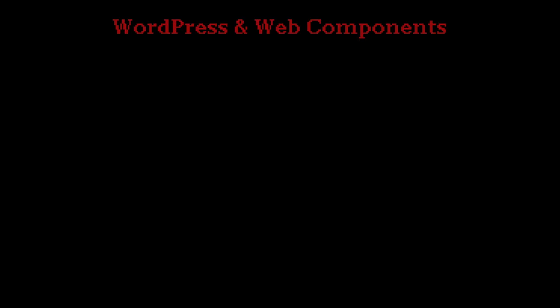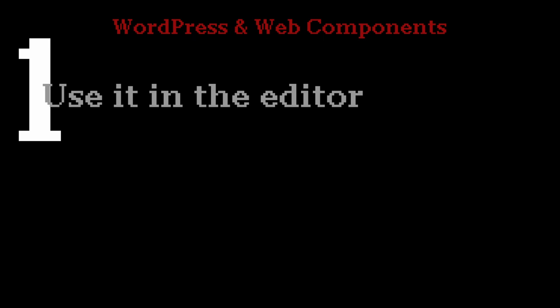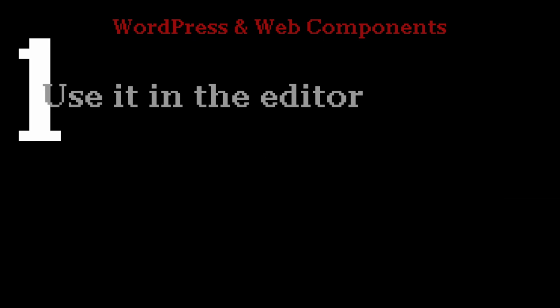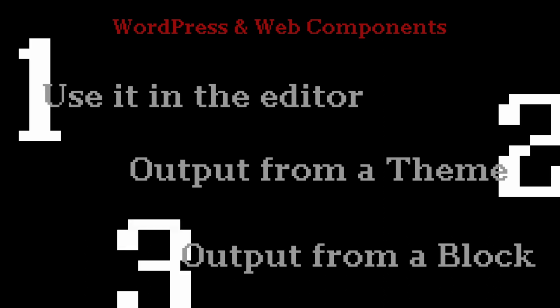There are three major ways to implement Web Components in WordPress: first, using them in the editor; second, outputting from a theme; and third, outputting from a block. Before looking at the first approach, there are a couple of prerequisites — things we need to do regardless of which method we use.